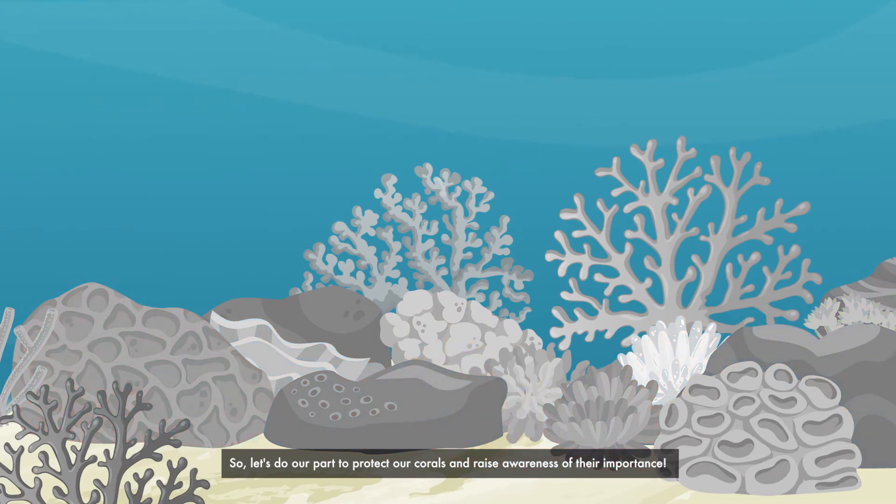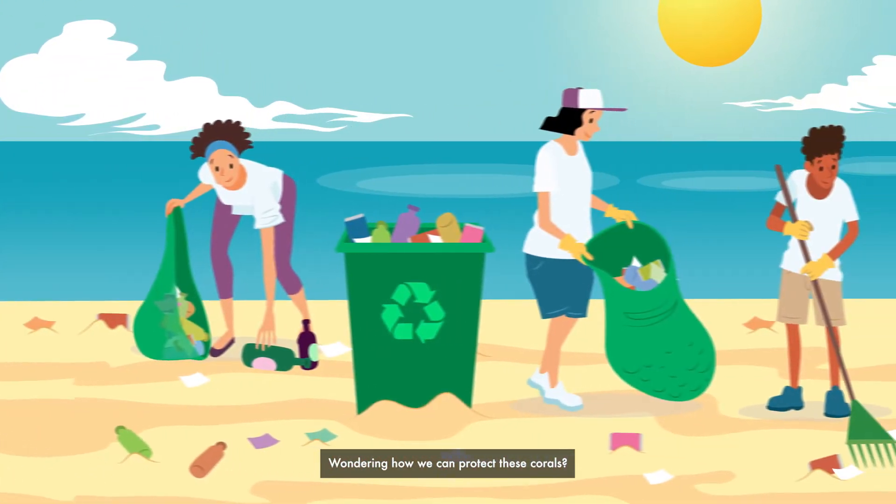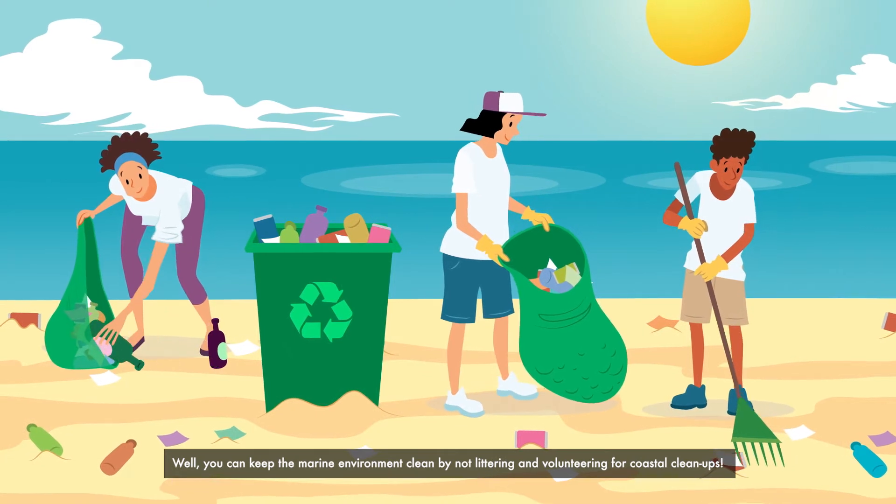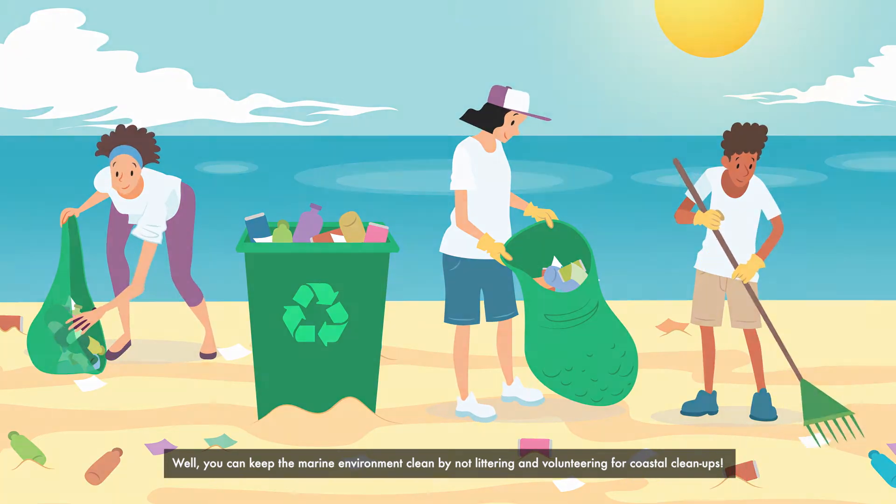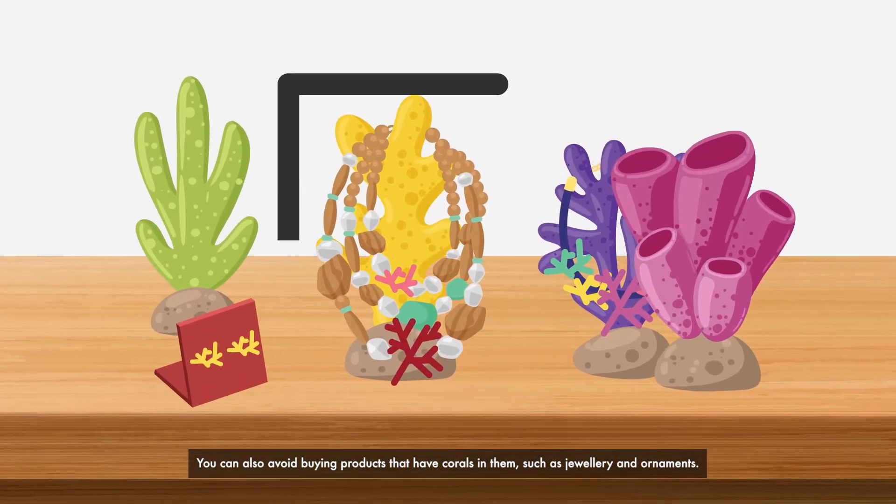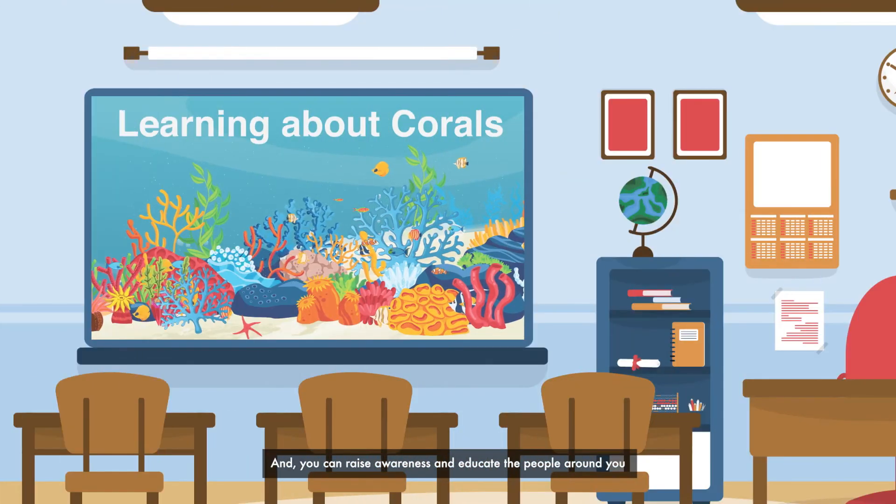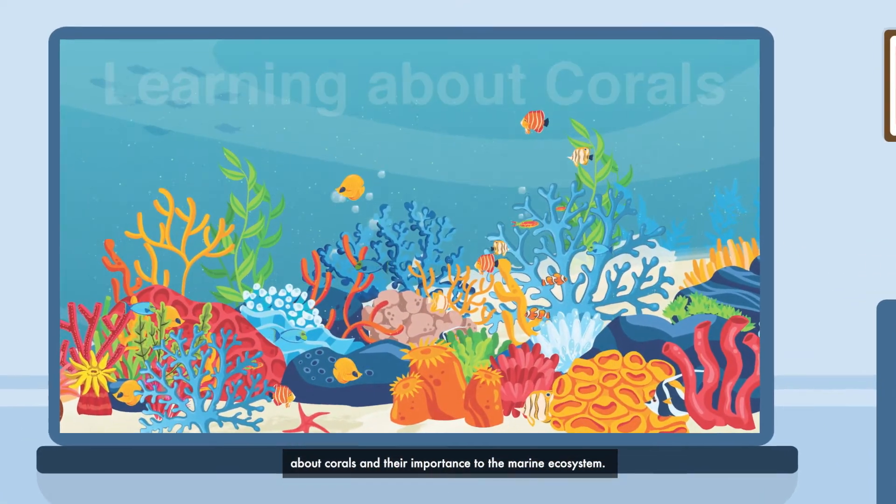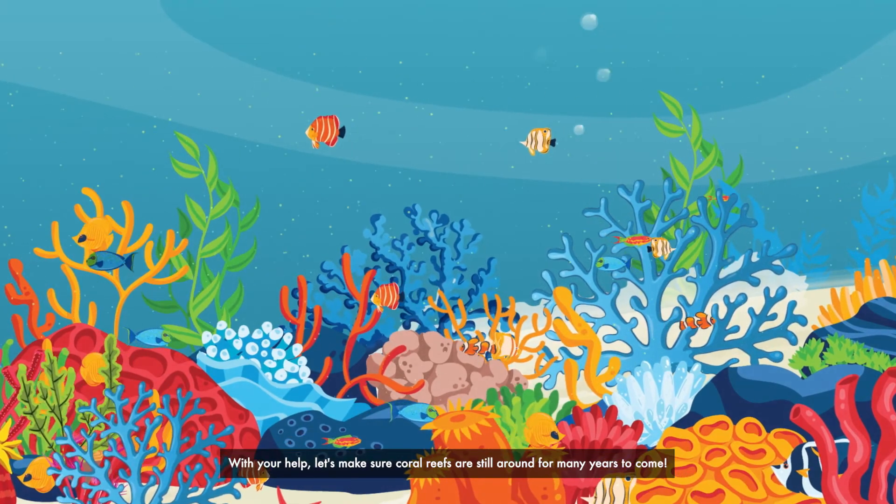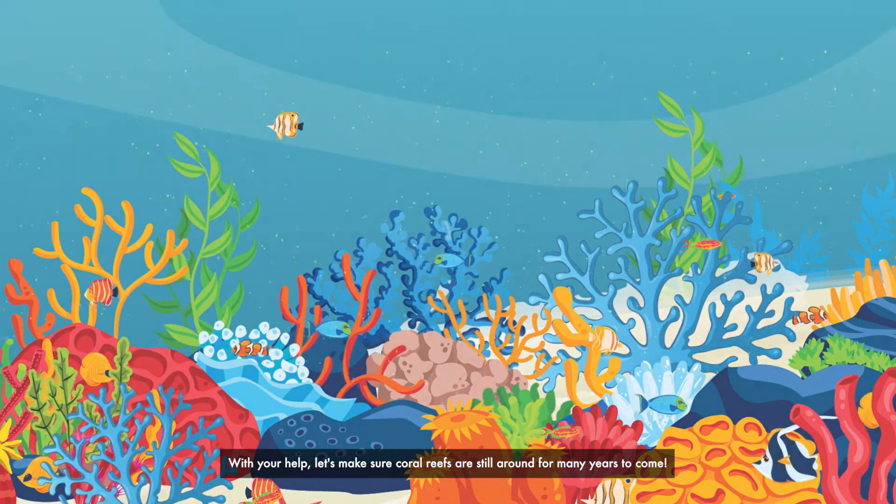So let's do our part to protect our corals and raise awareness of their importance. Wondering how we can protect these corals? Well, you can keep the marine environment clean by not littering and volunteering for coastal cleanups. You can also avoid buying products that have corals in them such as jewelry and ornaments. And you can raise awareness and educate the people around you about corals and their importance to the marine ecosystem. With your help, let's make sure coral reefs are still around for many years to come.